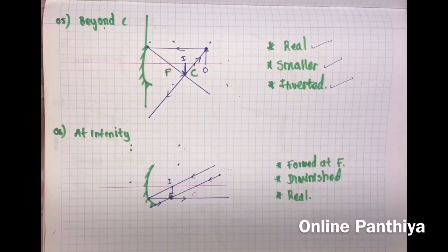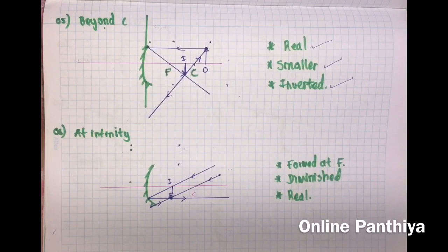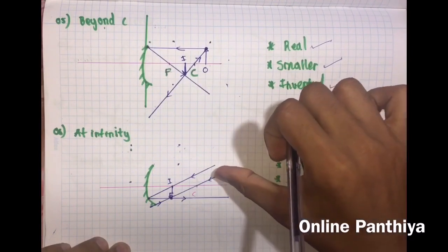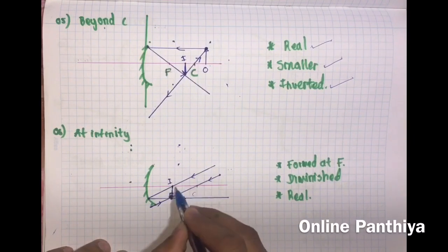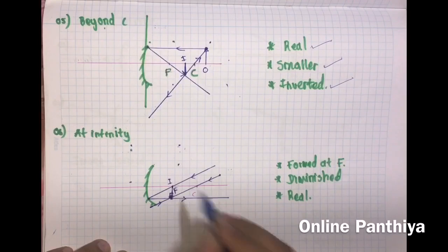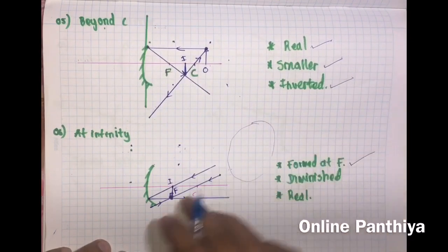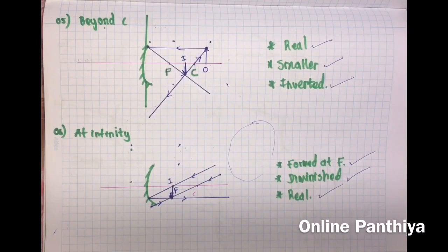Finally, when the object is at infinity, the incoming rays are parallel to each other. One ray comes parallel to the principal axis and goes through F. Another ray, treated as coming through C, returns on the same path. These meet at F — so the image is formed at F. The image is diminished, inverted, and real, because it forms on the same side.